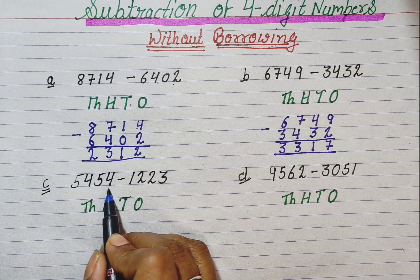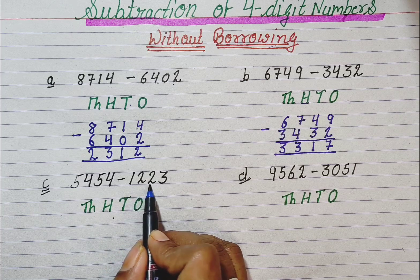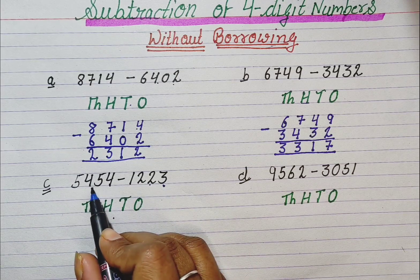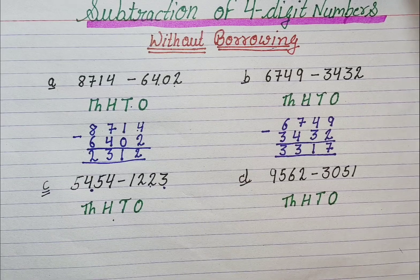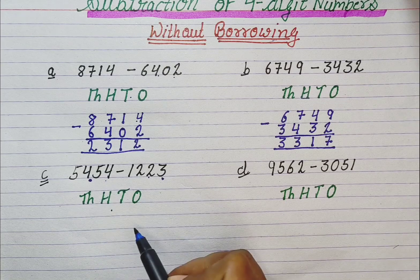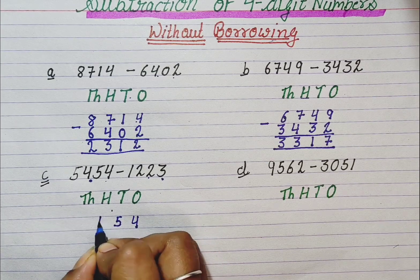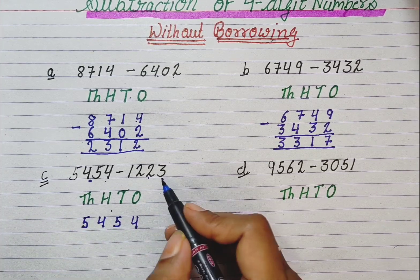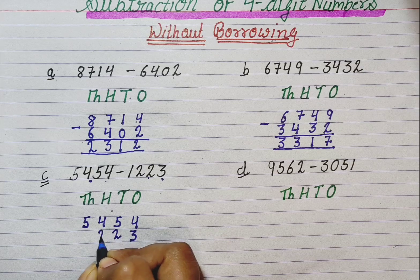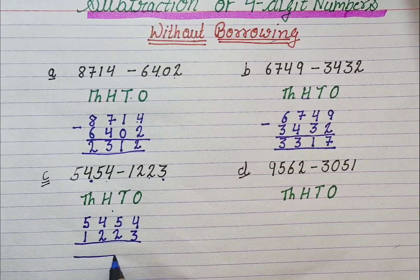5454 minus 1223. We subtract these numbers from these. First, we write the numbers one below the other. We write the top number: 4 in the 1's place, 5 in the 10's place, 4 in the 100's place, and 5 in the 1000's place. Now we write the bottom number below it: 3, 2, 2, 1.